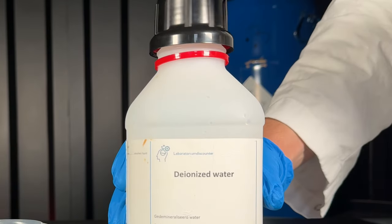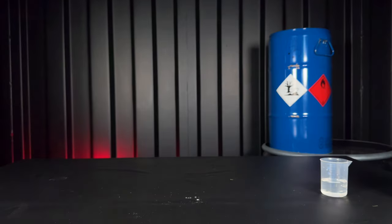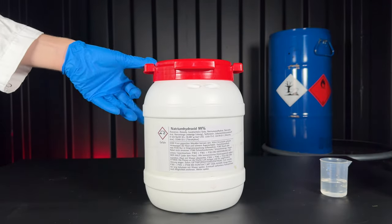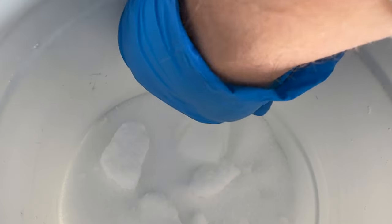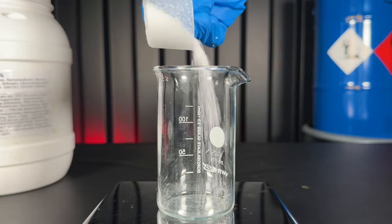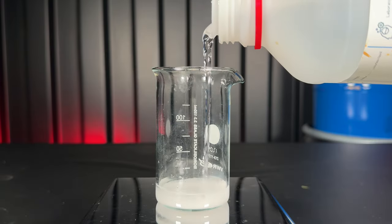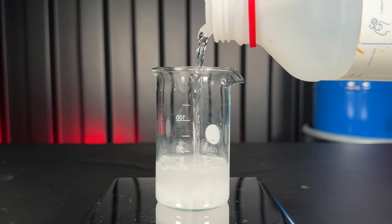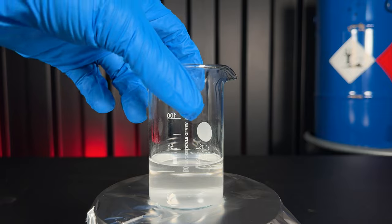I weighed out 8.5 grams of silver nitrate and dissolved it in distilled water. With sodium hydroxide, silver nitrate can easily be converted to silver oxide and I weighed out 4 grams of it. If I add the solid sodium hydroxide to the silver nitrate solution, it may get covered with silver oxide and the reaction won't be as efficient, therefore I dissolved it.